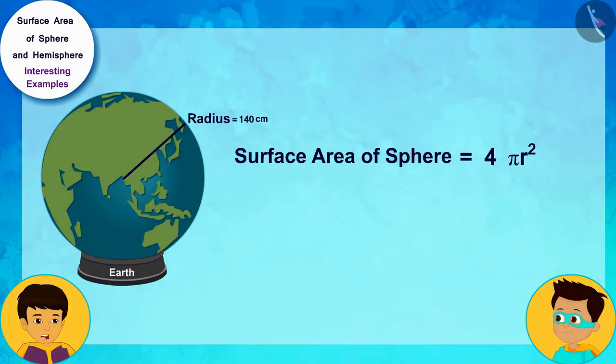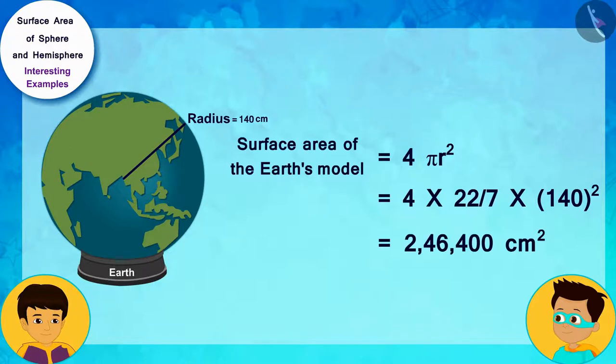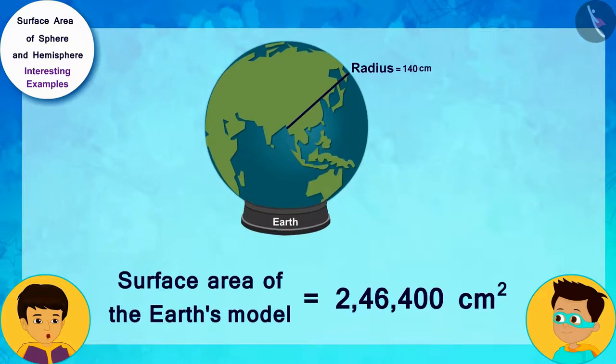Okay, now it's my turn. I will solve it by writing the radius of the model of the earth 140 centimeters in the formula for the surface area of the sphere. Look, the surface area of the earth's model is 246,400 square centimeters.